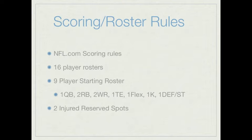Our scoring and roster rules: we're just going to use standard NFL.com scoring rules this year — keep it simple and get everybody into the flow. Our rosters are going to be 16 players with a 9-player starting roster featuring a quarterback, two running backs, two wide receivers, a tight end, a flex position which can be a wide receiver or tight end, a kicker, and a defensive/special teams, as well as two injured reserve spots. If a guy gets hurt and is back in two weeks, you just leave him on the injured reserve list.